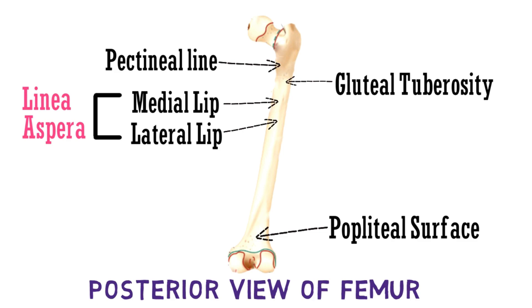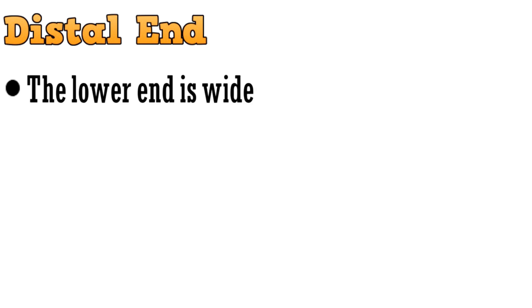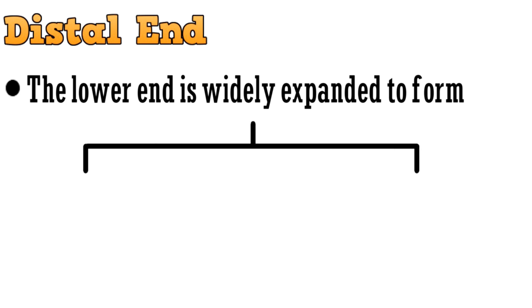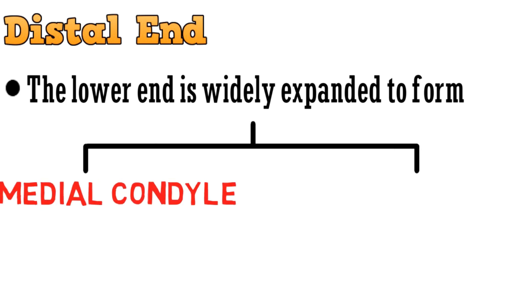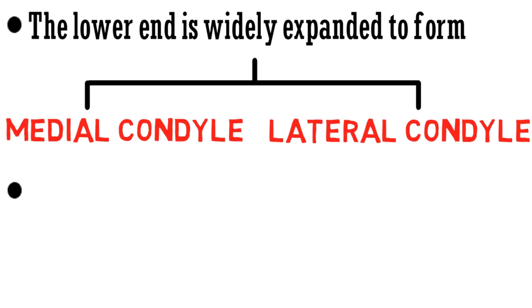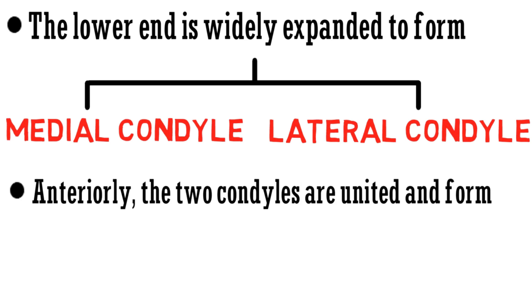This completes the second part of femur, that is the shaft, and brings us to the last part, the distal end. The lower end of the distal end is widely expanded to form two condyles: the medial condyle and lateral condyle. Anteriorly, the two condyles are united and form the patellar surface.